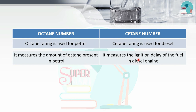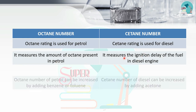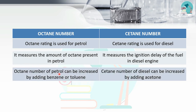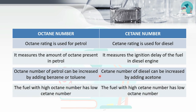In diesel engines, cetane number measures ignition delay. To increase the octane number of petroleum, benzene or toluene is added. To increase the cetane number of diesel, acetone is added. A fuel with a high octane number has a low cetane number, and vice versa.